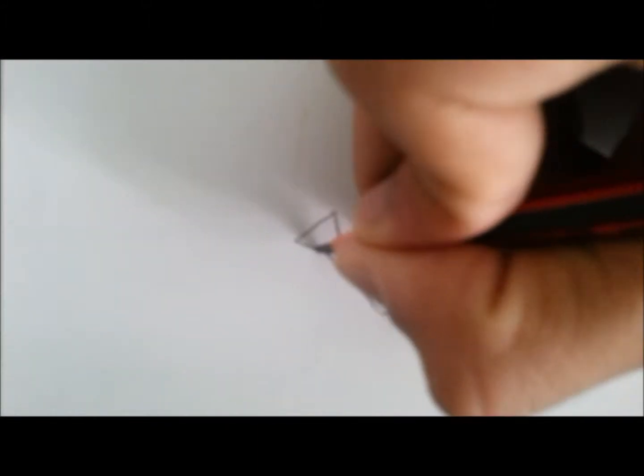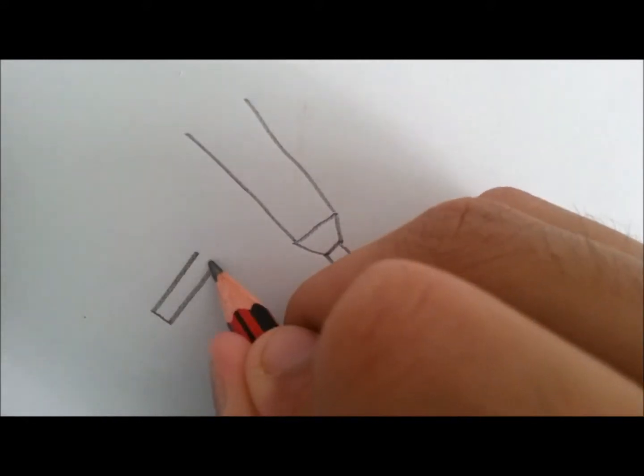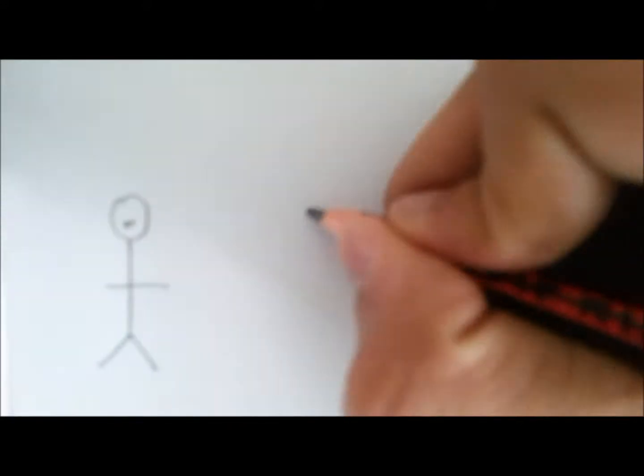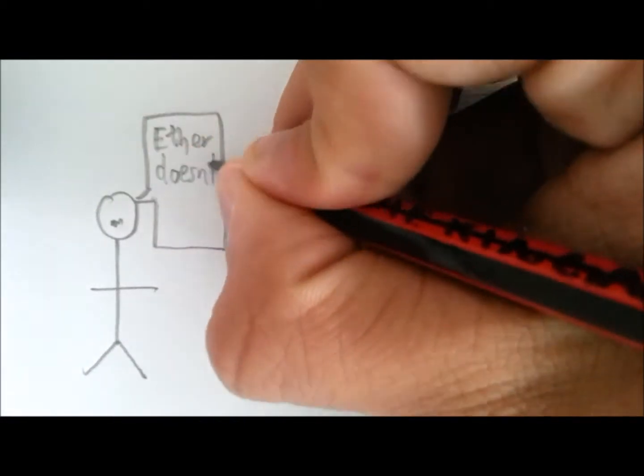So what Michelson and Morley did was to send beams of light in two directions and compare the speeds of the two beams of light. What they found was that the two beams of light moved at the exact same speed.